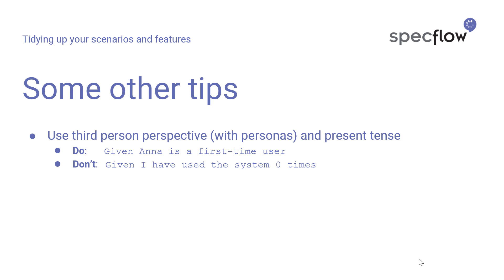Another tip to keep your scenarios vibrant and readable is making use of present tense. Instead of saying 'given I have used' or 'I have ordered' — examples of the perfect tense — use the present tense. So 'given Anna is', 'when she purchases', 'when she removes', because this makes your steps easier to read, much more alive and vibrant. As a bonus, it will make them a little shorter as well, since you can describe the same behavior with fewer words.